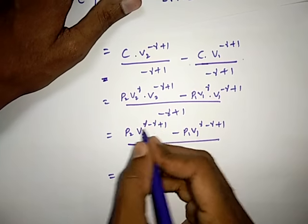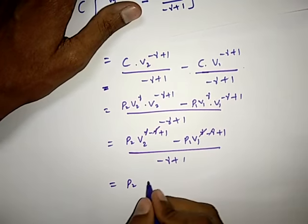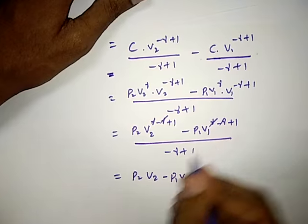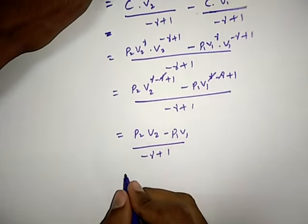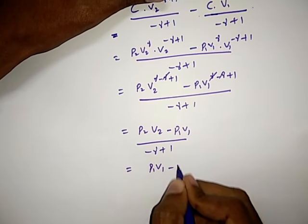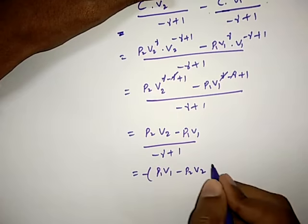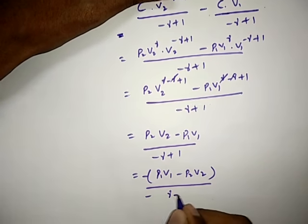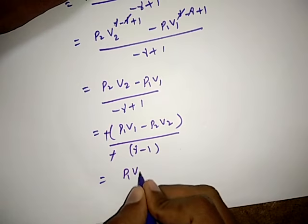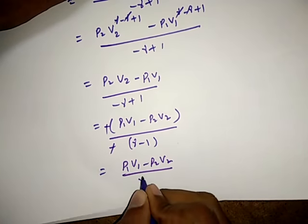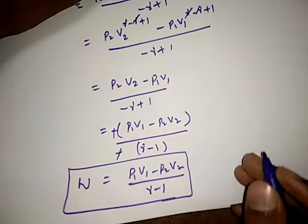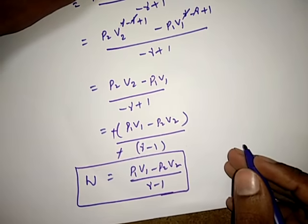Simplifying, gamma and gamma cancel, and V2 to the power of 1 means I can write only V2, minus P1 V1 to the power of 1, all over minus gamma plus 1. If I take minus as common, this becomes P1 V1 minus P2 V2, and the denominator minus gamma plus 1 becomes gamma minus 1. So the final expression for work done in the adiabatic process is W equals P1 V1 minus P2 V2 by gamma minus 1. For more videos, please subscribe, like, and share. Thank you.